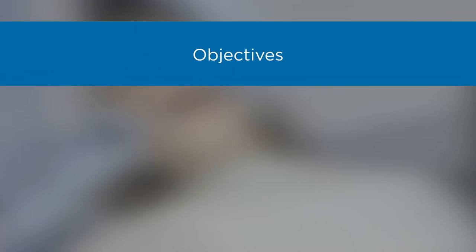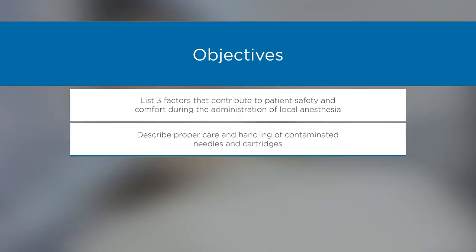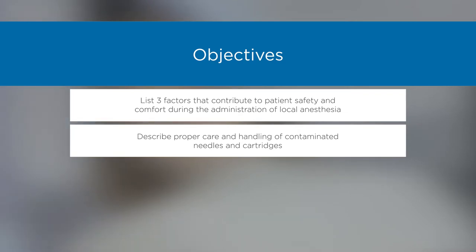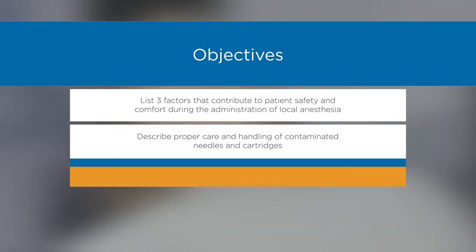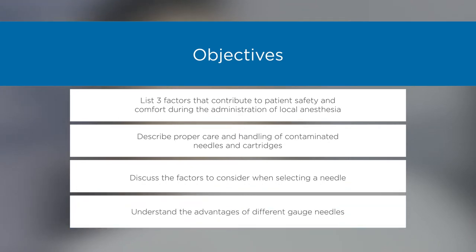Objectives: List three factors that contribute to patient safety and comfort during the administration of local anesthesia. Describe proper care and handling of contaminated needles and cartridges. Discuss the factors to consider when selecting a needle. Understand the advantages of different gauge needles.